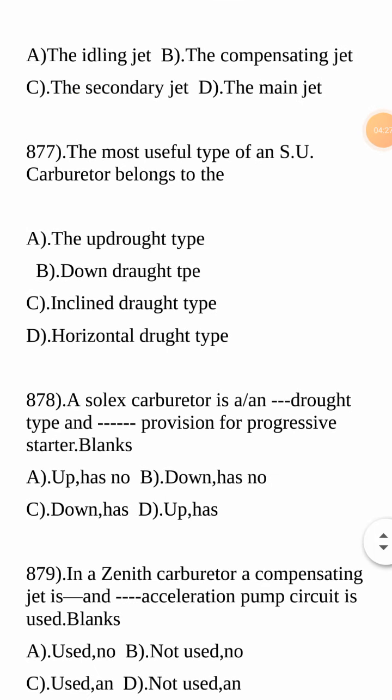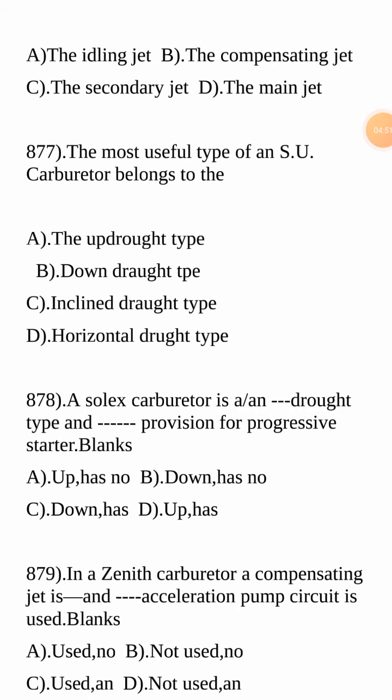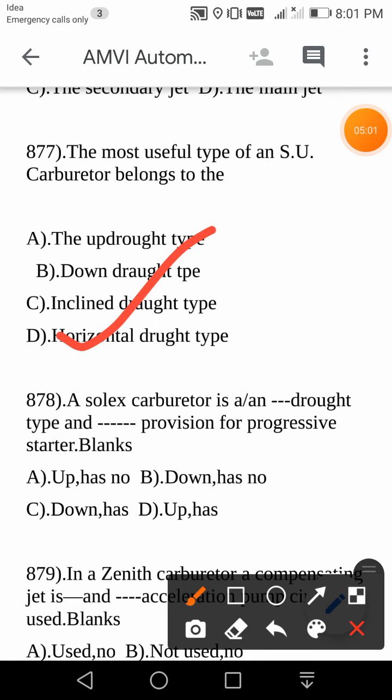Next question: The most useful type of SU carburetor belongs to which type? There are various types — updraft, downdraft, inclined draft, or horizontal draft. The SU carburetor type that is most commonly used and most useful belongs to the horizontal draft type. Your answer is horizontal draft type.